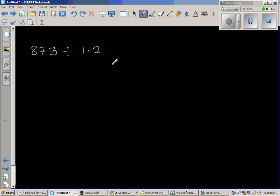So 1.2, if I want to change this into a whole number, if I multiply by 10, this will become 12. So if you multiply 1.2 by 10, you'd also multiply this by 10. So this question changes to 8730 divided by 12. So both of them are equivalent.